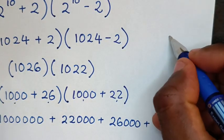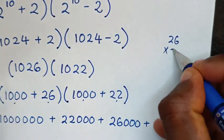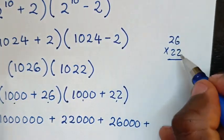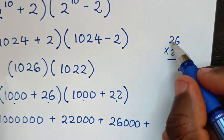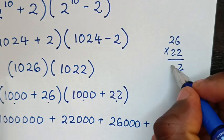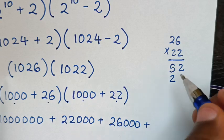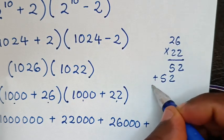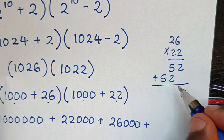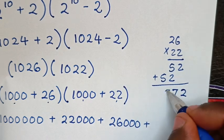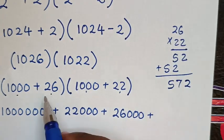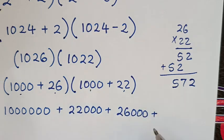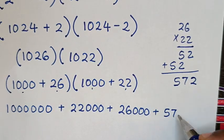Now from 26 times 22, 6 times 2 is 12, carry 1. 2 times 2 is 4 plus 1 is 5. So we add here, it will be 2, this plus this is 7, then 5. So 26 times 22 is 572.